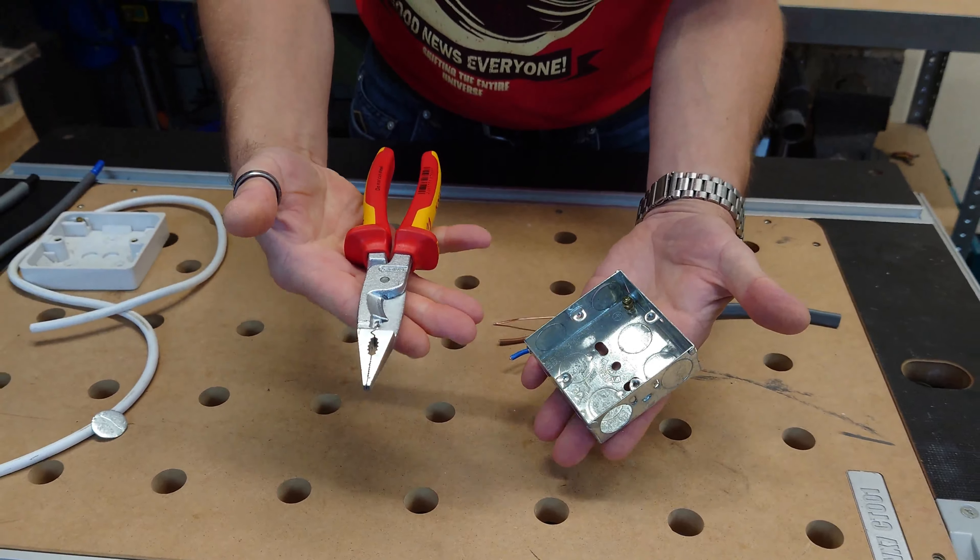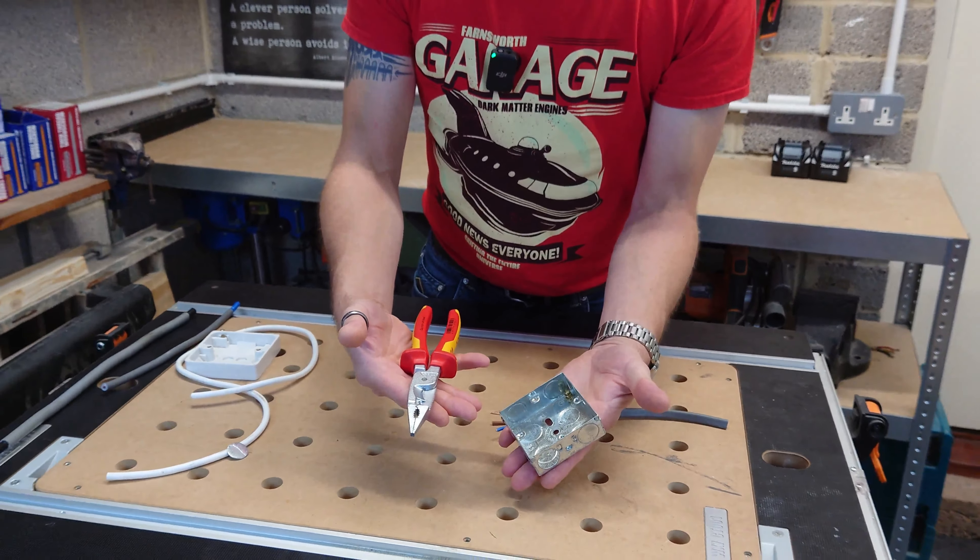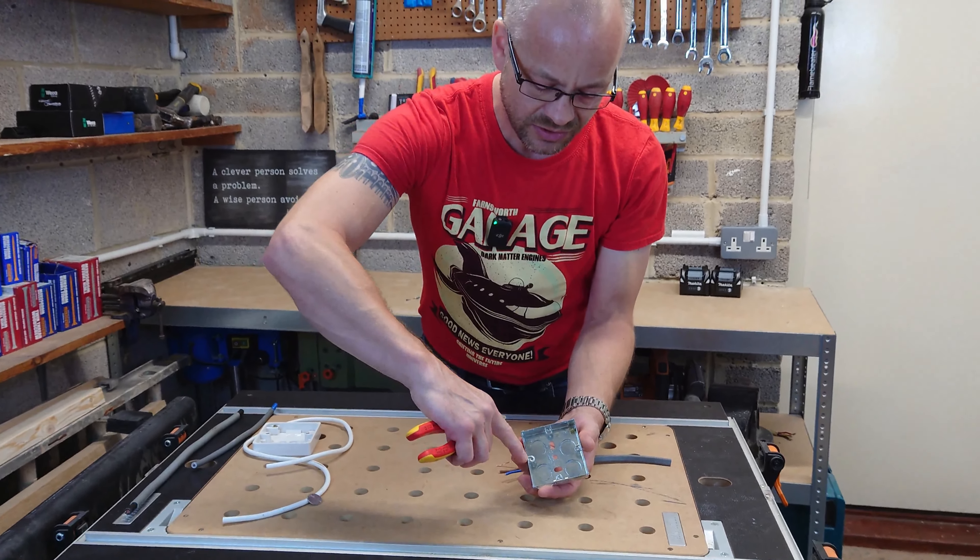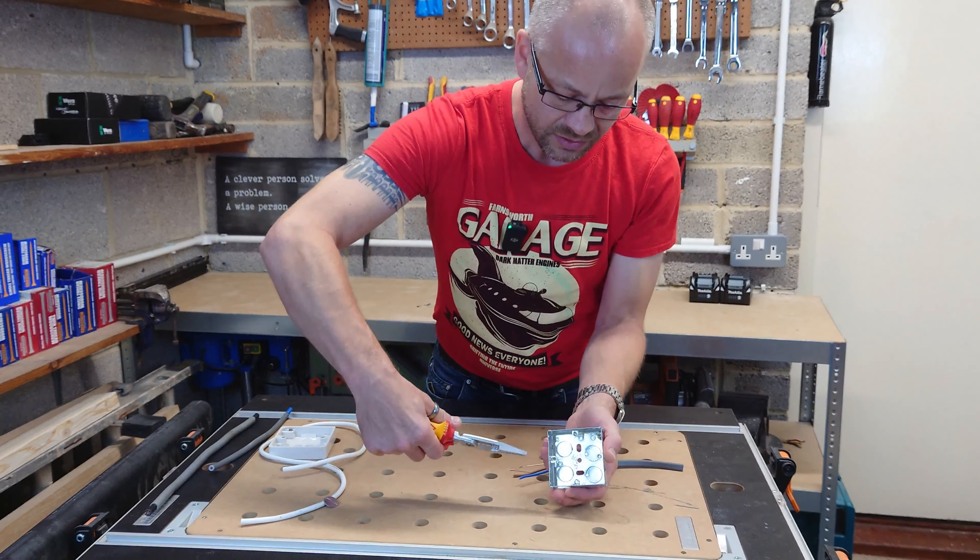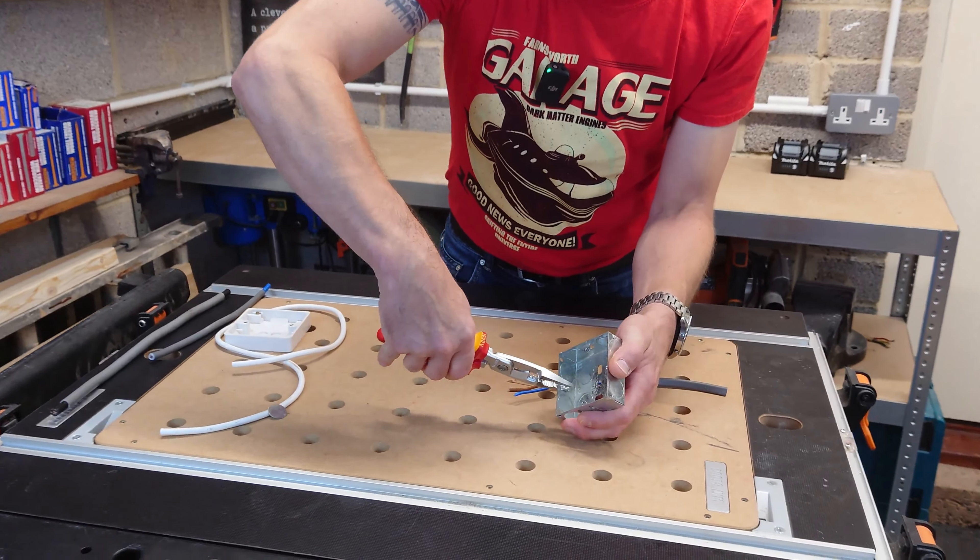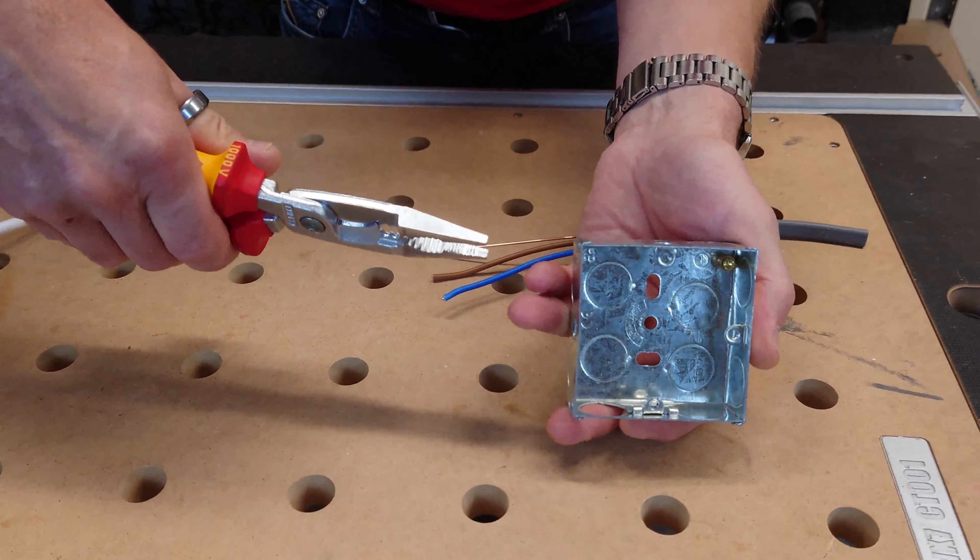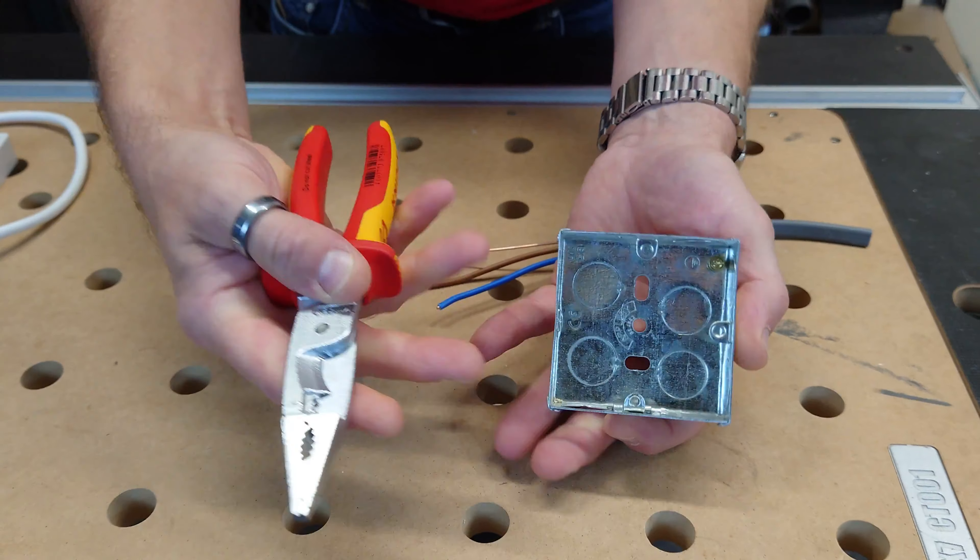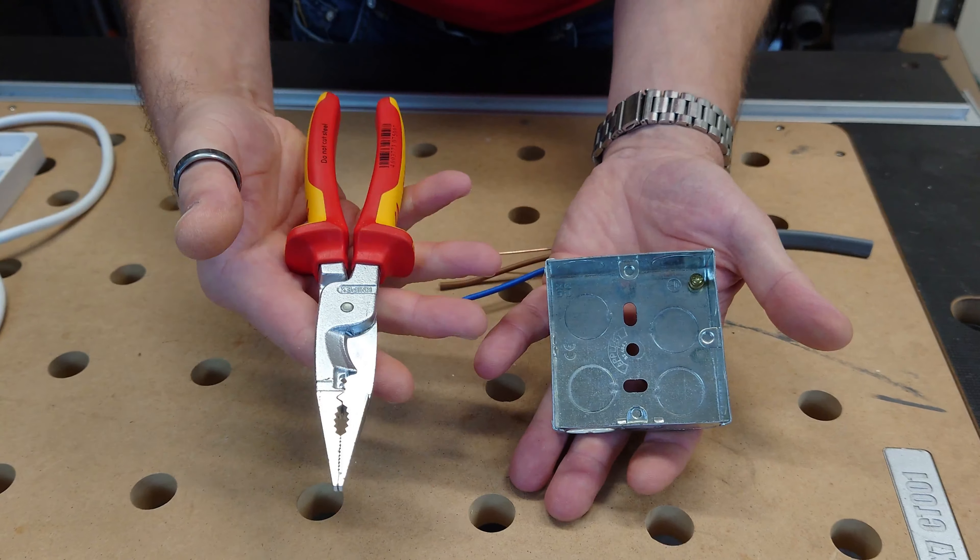And if you're doing things like fitting dimmer switches, then with the lugs on the side there, really simple, just push it in, and it bends up nice and flat, so they're out of the way for all your switch gear and your accessories going in.